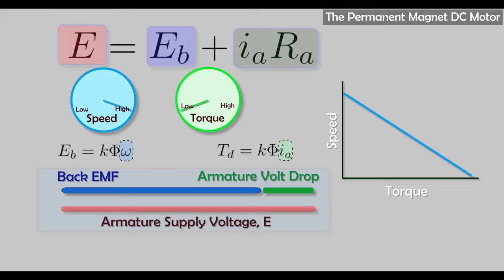We can also use so-called H-bridge schemes, which allow a reversible drive — you can switch the transistors in a particular way to change the direction and control speed and torque. To summarize: we've talked about permanent magnet DC motors and their use of permanent magnets to generate the magnetic field. We've observed that speed regulation is very good because of the low armature volt drop. We've also seen that we can control speed or torque by varying the armature voltage, most efficiently done using electronic switches. We had a quick look at control schemes which monitor armature current, compare it with a setting, and modify voltage to hold current at the required setting.